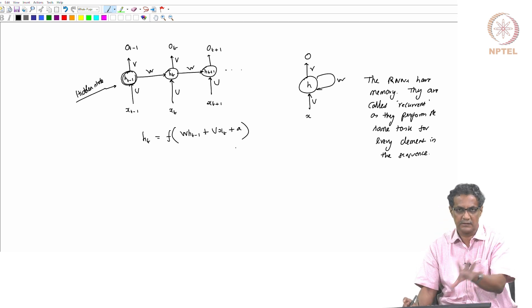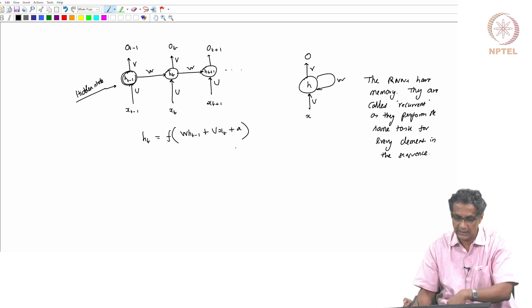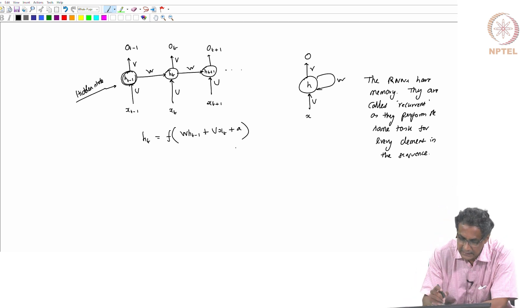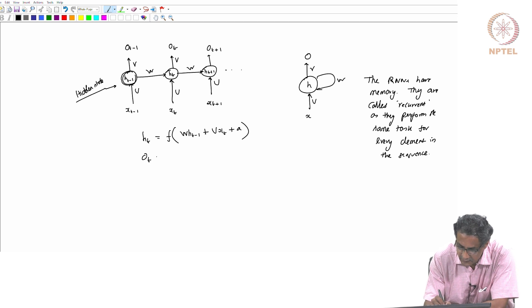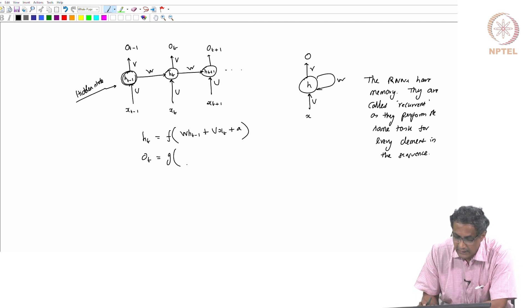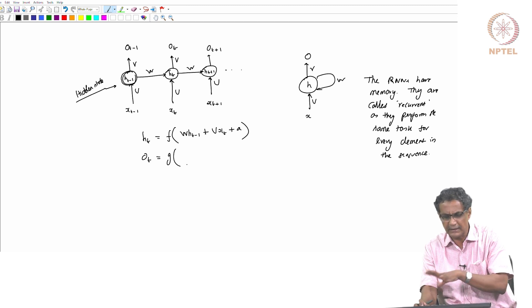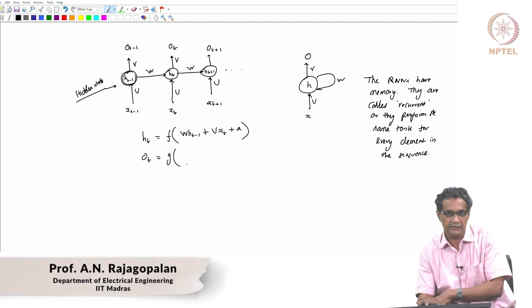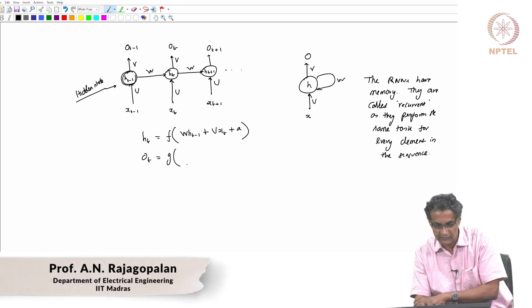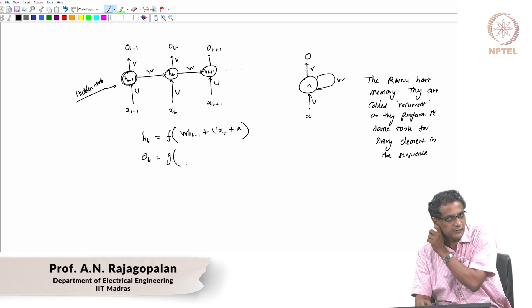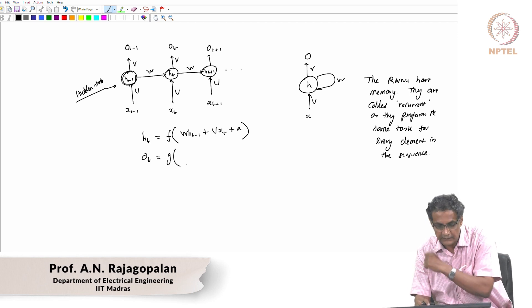The final output o(t) can be written as some function g. Typically, f is a tanh kind of function, and g is typically a softmax.